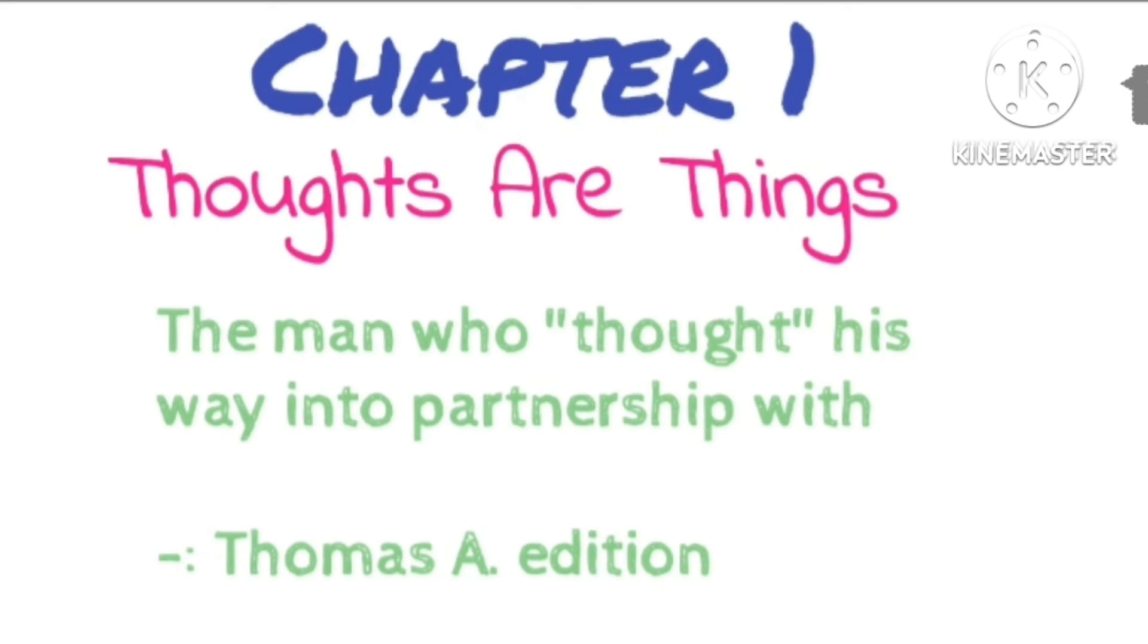He should have told us that before we can accumulate riches in great abundance, we must magnetize our minds with intense desire for riches, that we must become money conscious until the desire for money drives us to create definite plans for acquiring it. But being a poet and not a philosopher, Henley contented himself by stating a great truth in poetic form, leaving those who followed him to interpret the philosophical meaning of his lines.